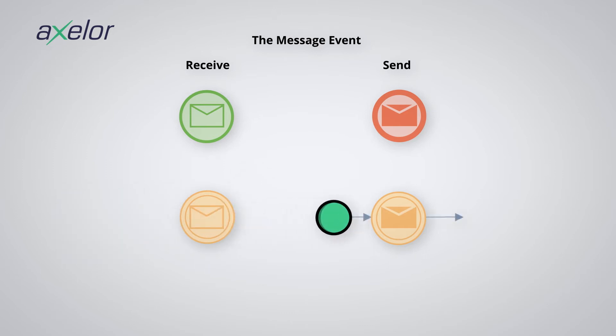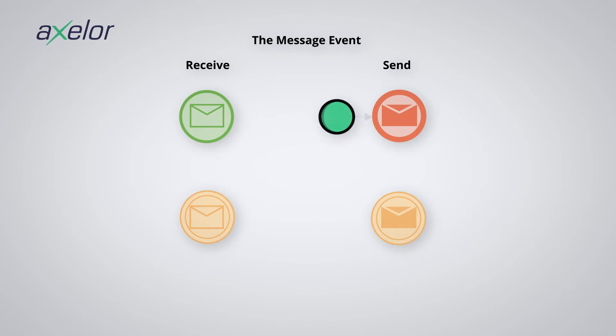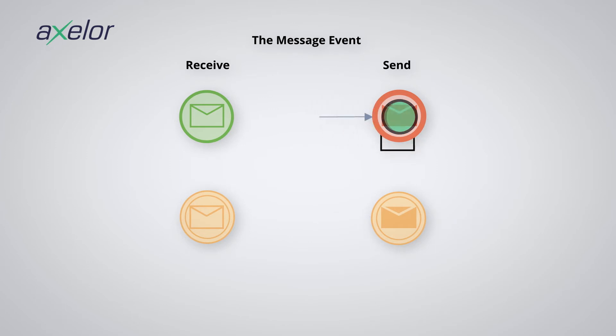As far as an intermediate event of sending a message is concerned, as soon as the token arrives, a message is sent and the token continues the process. And finally, the event of the end of sending a message will send a message, then assimilate the token.